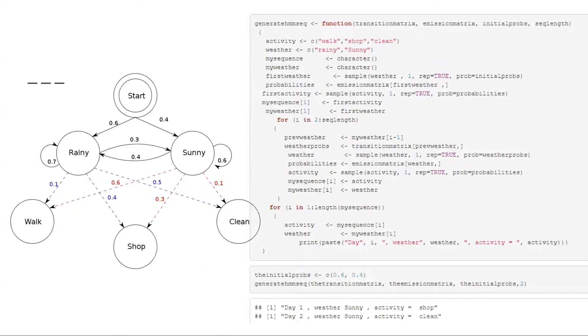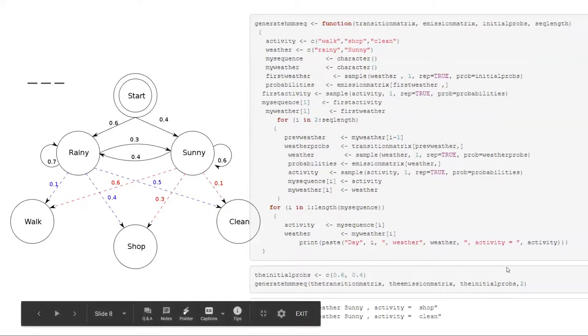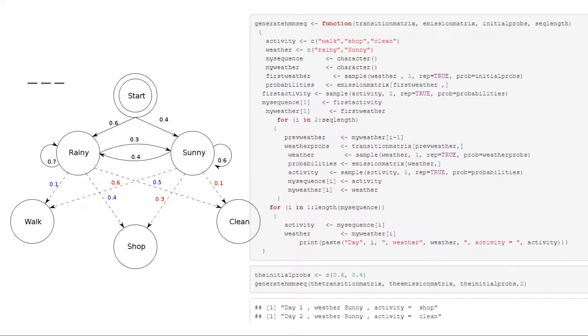So for this random result from R, as you can see at the end of this slide, if B goes shopping and the weather is sunny on day one, we could predict that the weather will most likely be sunny again if B cleans his apartment on day two.